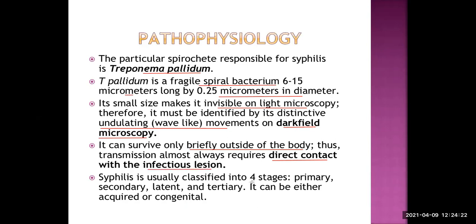Syphilis is usually classified into four stages: primary, secondary, tertiary, and latent. The latent stage is somewhat in between. It can be either acquired or congenital. We are going to cover all of this.